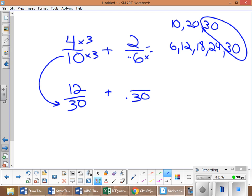Now all you have to do is add straight across. You have 12 plus 10 is 22, and then you keep the denominator the same. There is your answer.